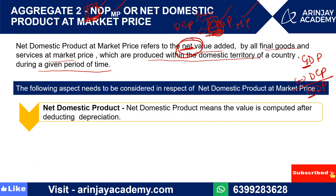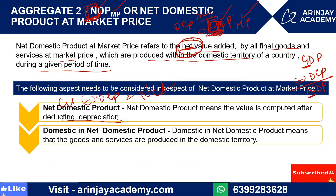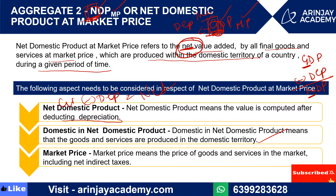For NDP, 'net' means it is computed after deducting depreciation — when you deduct depreciation from gross value, you get net value. 'Domestic' means the same — produced within the domestic territory. 'Market price' means net indirect taxes are still included. The key difference between NDP and GDP is depreciation: if depreciation is included, the value is at gross; if depreciation is excluded, it is at net.